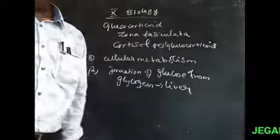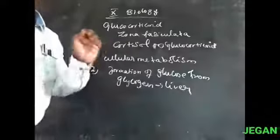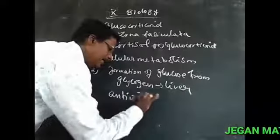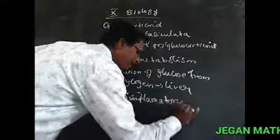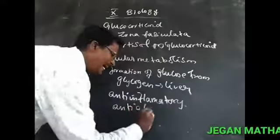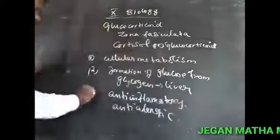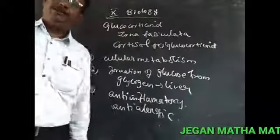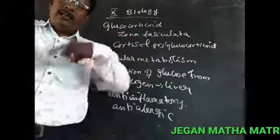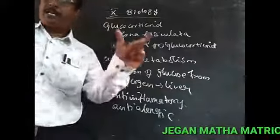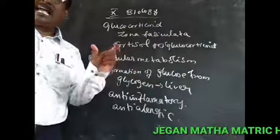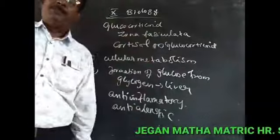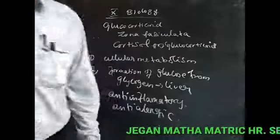Glucocorticoid also acts as an anti-inflammatory agent. It has anti-inflammatory and anti-allergic properties. When solids are active in the body and an organ becomes enlarged, that condition is called inflammation. Glucocorticoid helps prevent allergy as well.